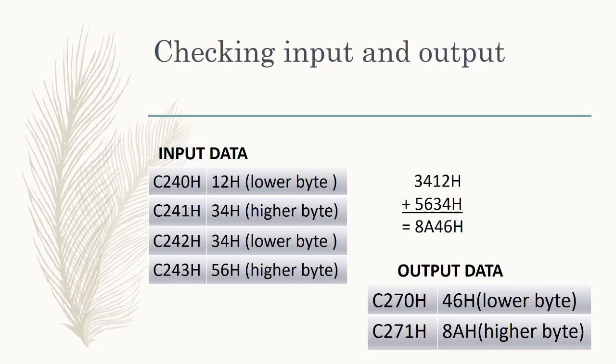The input data we are feeding is 1234H stored at C240H and C241H, and 3456H stored at C242H and C243H. These two 16-bit numbers are to be added, and the output of this addition is 468AH. This output will be stored in memory locations C270H and C271H as 46H and 8AH respectively.